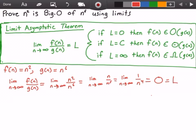So now we go and check the three cases, and we see the first case states that if L equals 0, then our function f of n belongs to Big O of g of n. So I'm gonna put below here by case 1 or the first case.